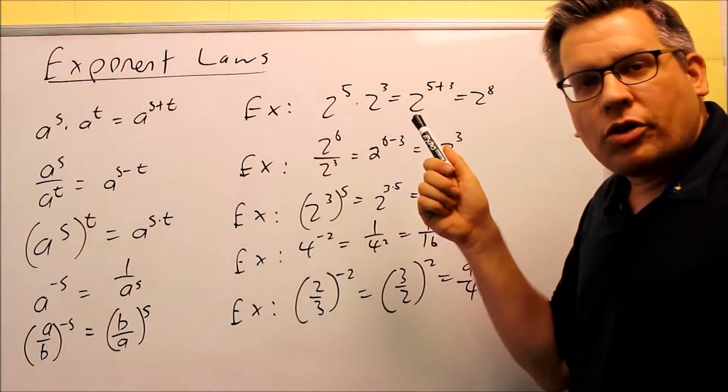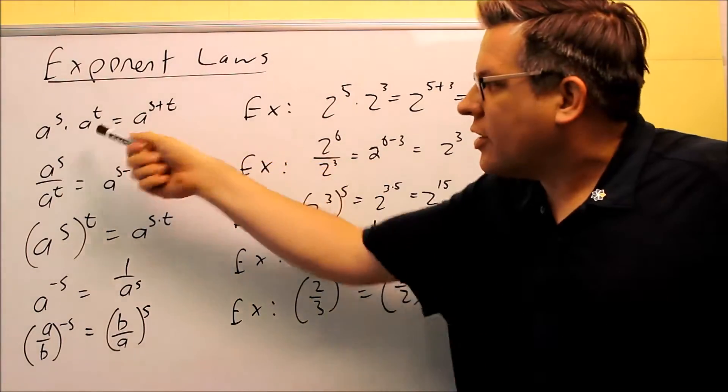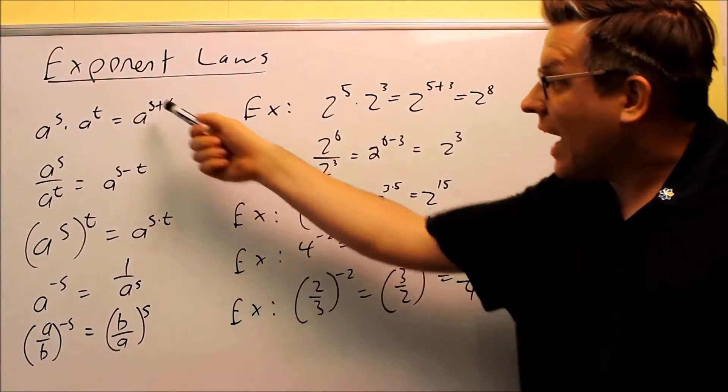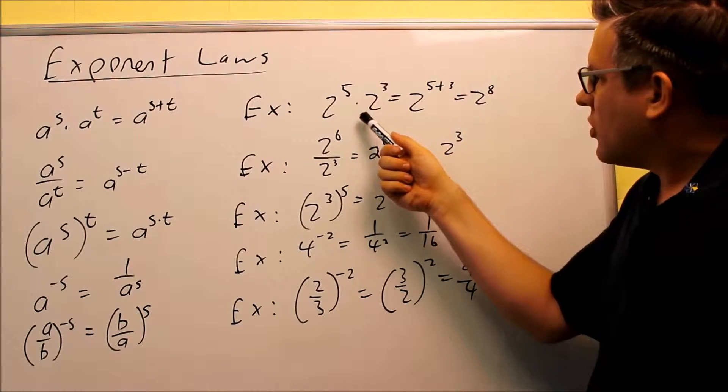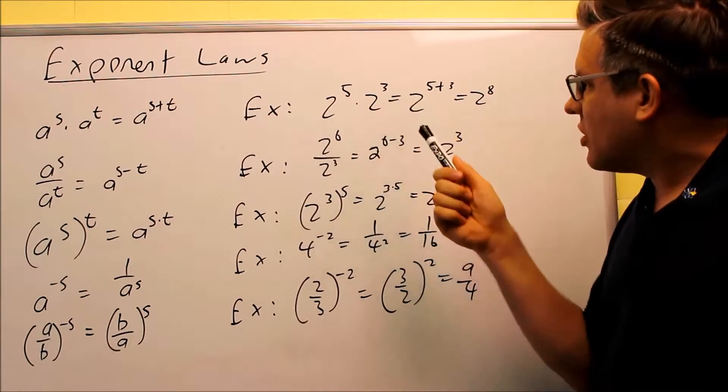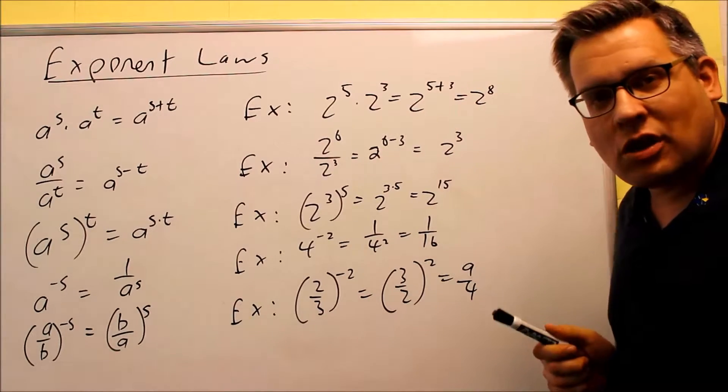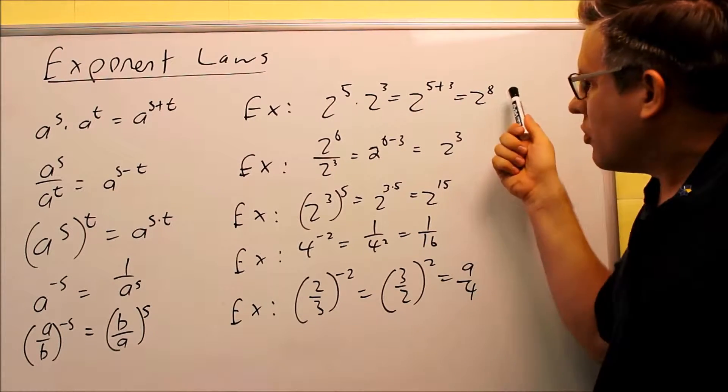So first of all, when you have the first one, if you're multiplying two things with the same base, you're going to be adding the exponents together. And so for this example, for instance, you have 2 to the 5th times 2 to the 3rd. The base is the same, adding exponents, you get the 8th power as a result there.